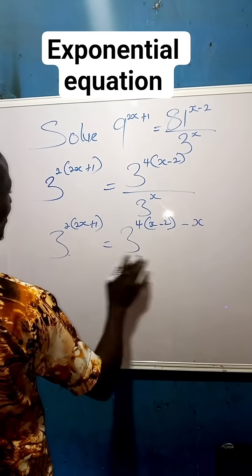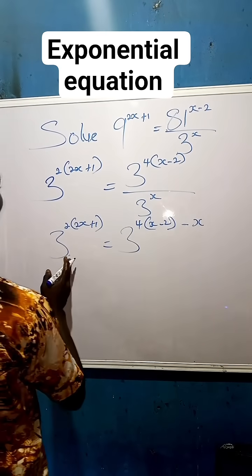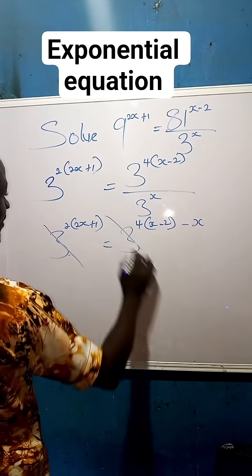What we have there, we can see that we have the same base but different powers. In this case, if you have the same base but different powers, you can equate the powers. So we cancel out the bases.